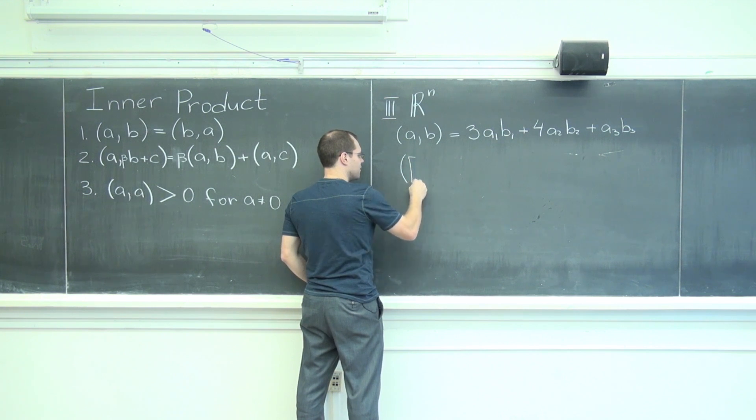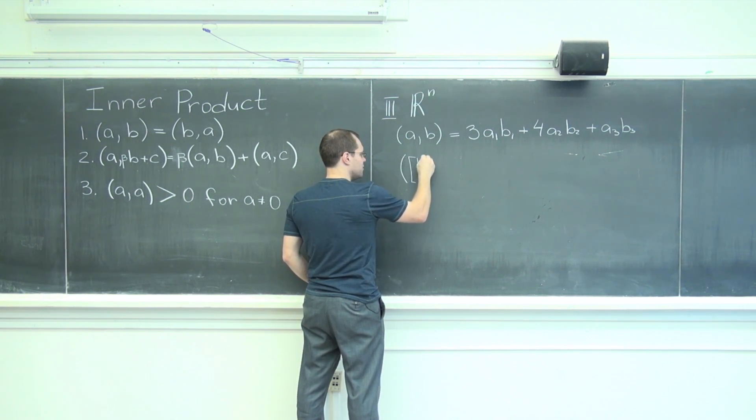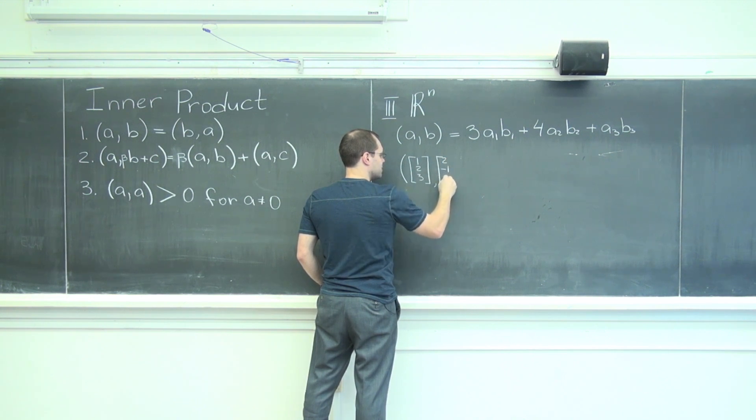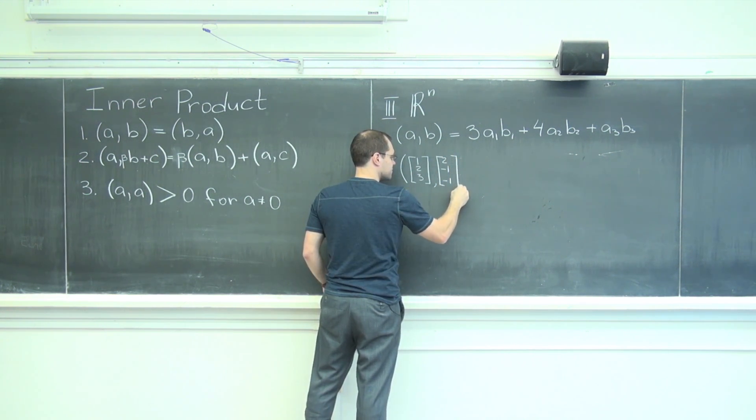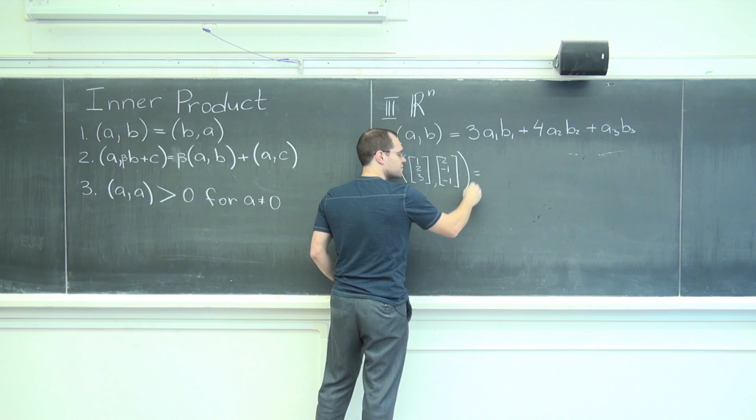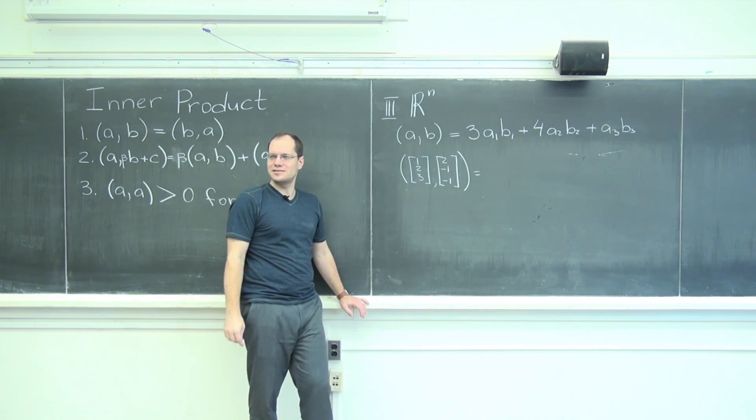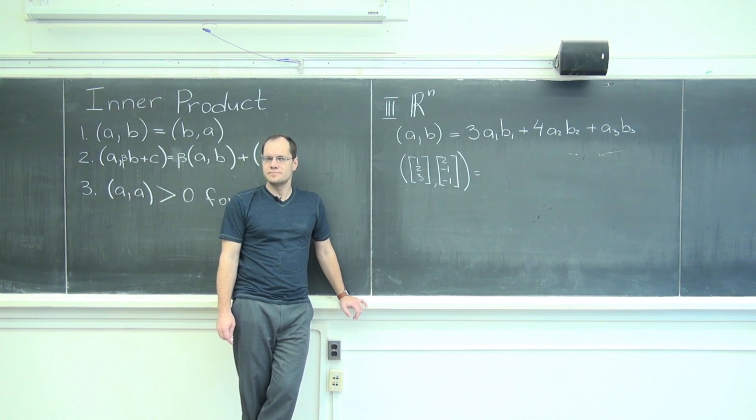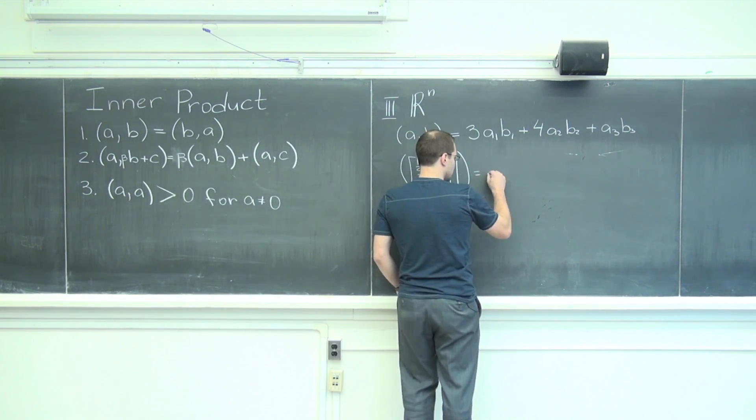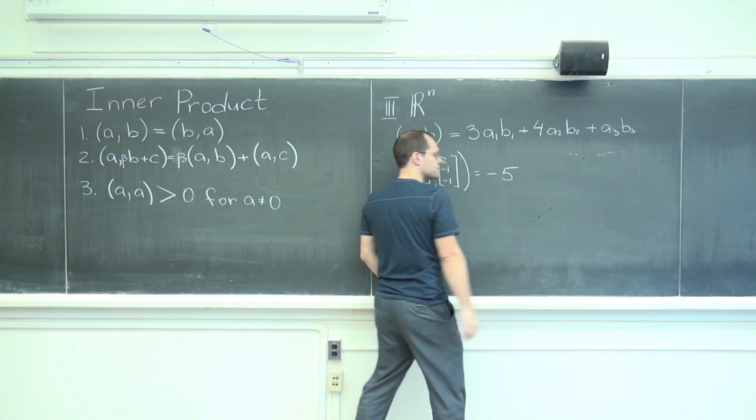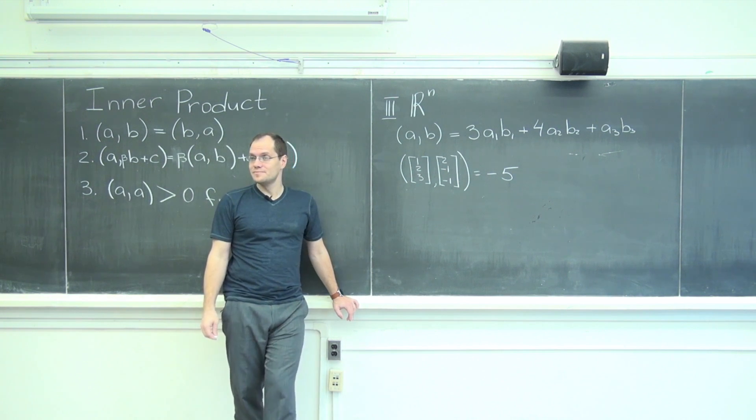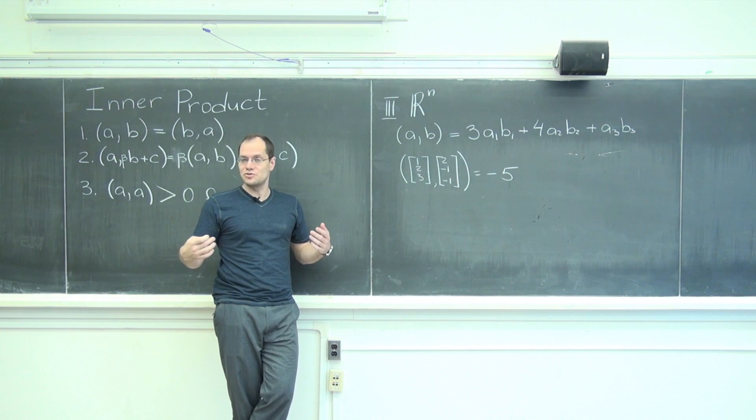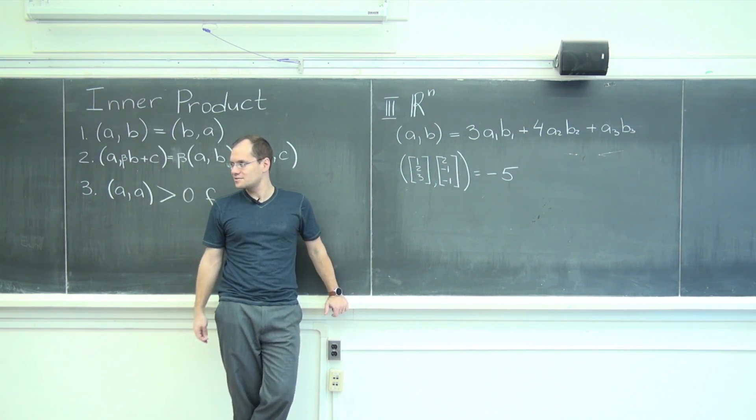So let's multiply (1, 2, 3) by (2, -1, -1). Two good-looking vectors. Okay, you guys do it in your heads, I'll do it in mine. Minus five. Okay, it's a number. So we see the first mental check is make sure that it's the sort of thing that takes two vectors and produces a number. It is.